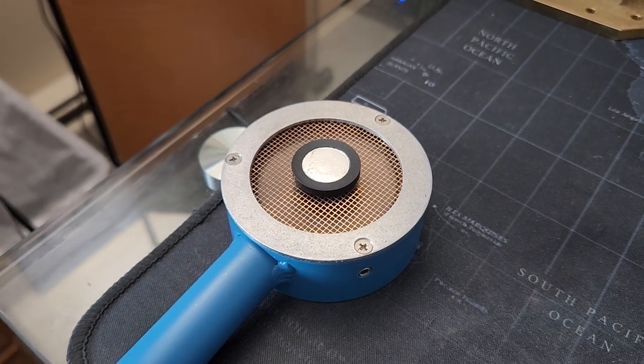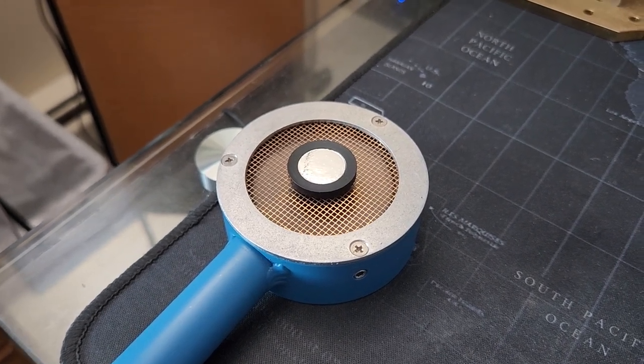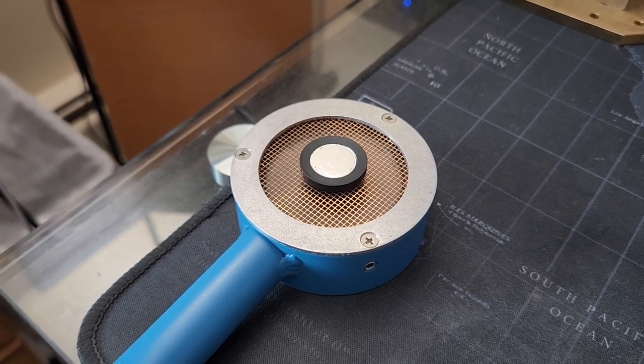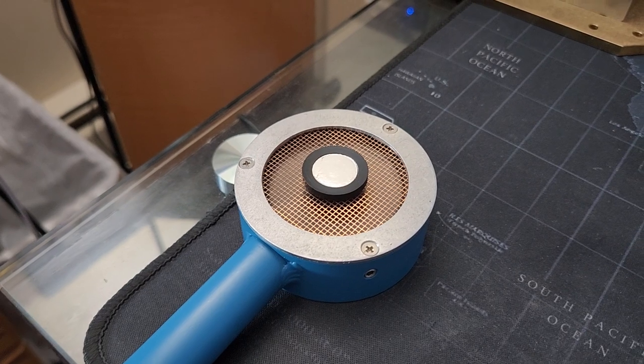100 microcurie carbon-14 source disk with the hot side facing away from the pancake. And the pancake's still picking up the beta.